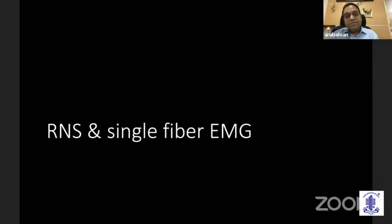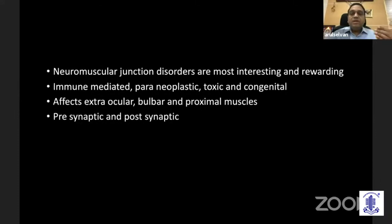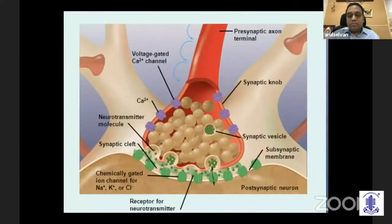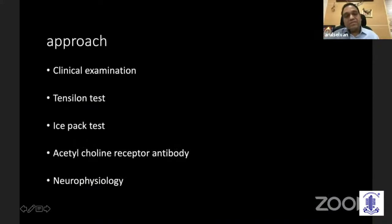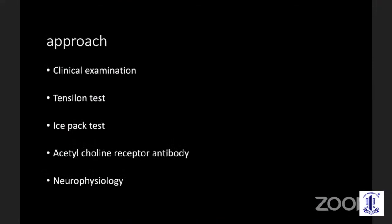The neuromuscular junction is very interesting. It can be immune-mediated, paraneoplastic, toxic, or congenital. It predominantly affects the ocular muscles but not visual acuity; the eyelids and proximal muscles are heavily involved. There are presynaptic and postsynaptic disorders. This schematic shows acetylcholine stored in presynaptic vesicles; when a calcium stimulus arrives, acetylcholine is released and binds to acetylcholine receptors on the postsynaptic membrane, initiating muscular action.